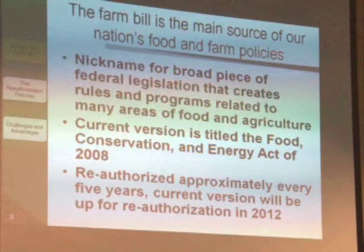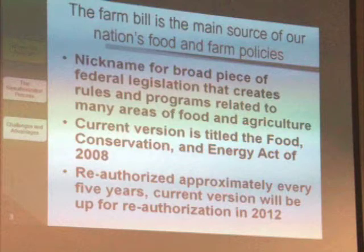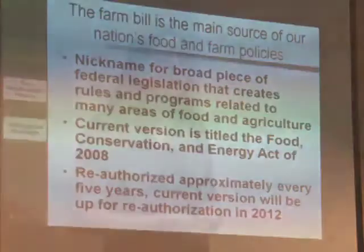The Farm Bill is a massive piece of legislation that covers many areas of food, farming, conservation, and energy. The current version was written in 2008 and will be up for reauthorization in 2012. The Farm Bill is an omnibus bill, which means it encompasses many different areas, more than just farms. It contains 15 titles, each governing a different area of interest. These titles can change from bill to bill and some of the content is a bit interrelated.